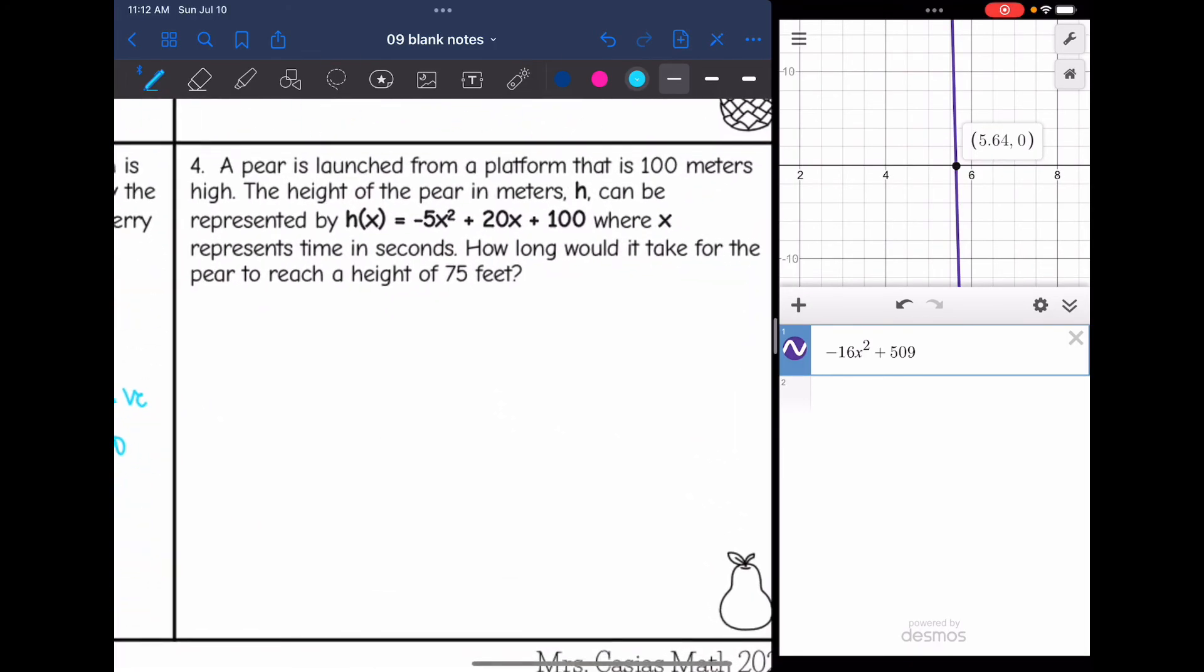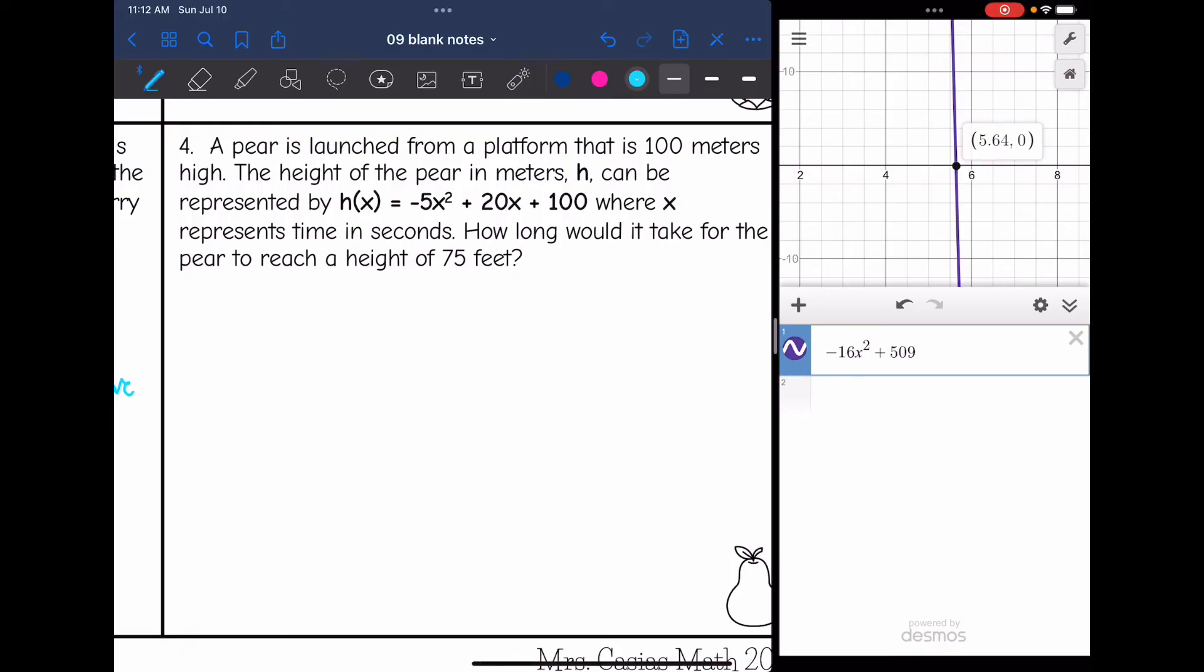A pair is launched from a platform that is 100 meters high. The height of the pair in meters, h, can be represented by h(x) = -5x² + 20x + 100, where x represents the time in seconds. How long would it take for the pair to reach a height of 75 feet?